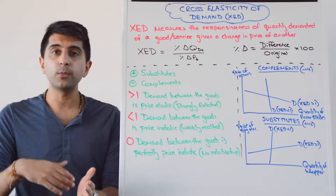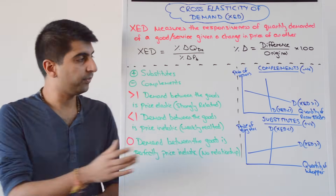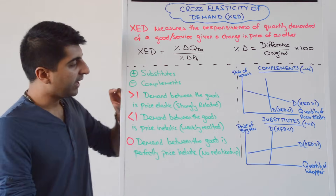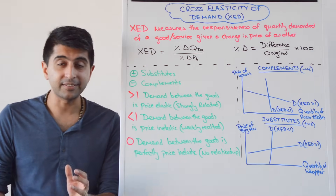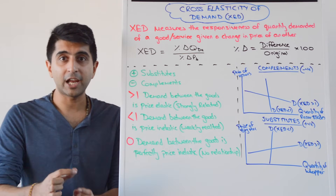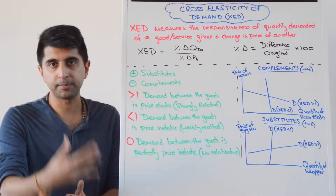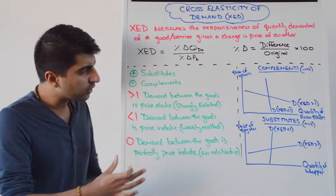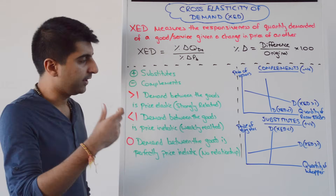So that's how we work out whether the goods are substitutes or complements. Then the figure: once we have worked out the nature of the goods, we can ignore the sign completely and just look at the raw number. If that number is greater than one, it means that demand between the goods is price elastic — when the price of one good changes, quantity demanded for the other will change proportionally more. They are strongly related substitutes or complements.